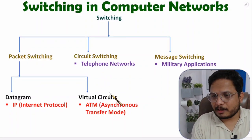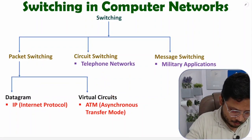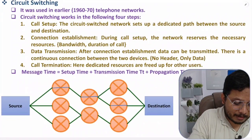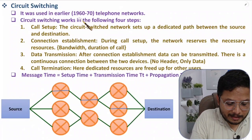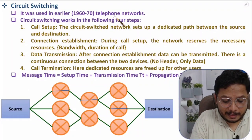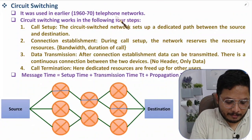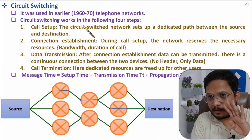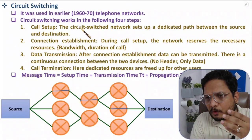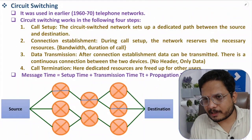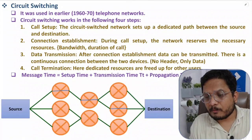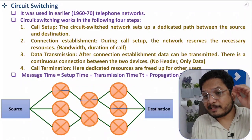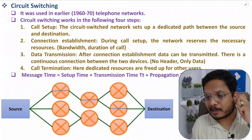Let me explain how circuit switching works. Circuit switching was used way back in the 1960s and 70s in telephone networks. There are four steps involved. Before I explain all four steps, let me give you one practical example.